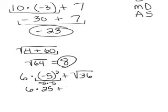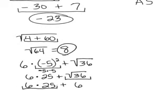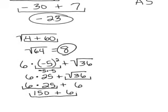Then I copy down the rest of the problem. The next thing is the square root of 36 — that's the next order of operations. The square root of 36 is 6 because 6 times 6 is 36. Copy down the rest of the problem. Now I have multiplication and addition. Multiplication comes before addition, so I need to do 6 times 25. If I think of quarters, 6 quarters would be $1.50, so 6 times 25 is 150. Bring down the rest of the problem and do the addition: 156.